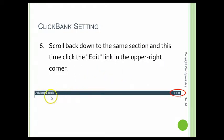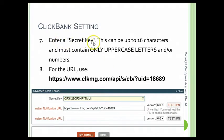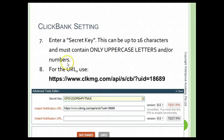Come back to the same page, to the Advanced Tools section, and click Edit. Once you are done, you need to enter a secret key in your ClickBank account. Please note that this secret key is randomly entered — do not follow my secret key, as each of you must use a different one. It is up to 16 characters and must only include uppercase letters and/or numbers. For the Instant Notification URL, copy exactly the URL given by ClickMagick, paste it in here, select version 6, click Test IPN, and once it is verified, click Save Changes.